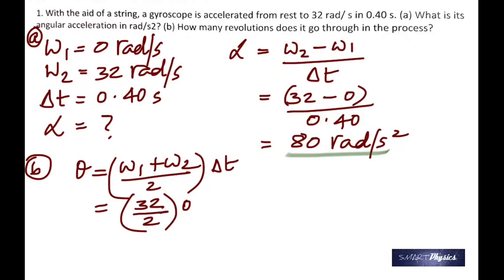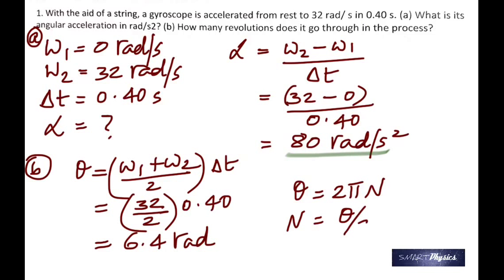Well, omega 1 is 0, so I have not written it. That's just omega 2, which is 32. Get 6.4 radians. And since we know that in one rotation the angle described is 2 pi, all you got to do is divide this angle by 2 pi to get the number of rotations. That's 1.0 revolutions.